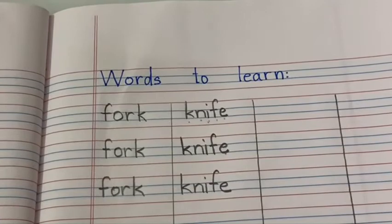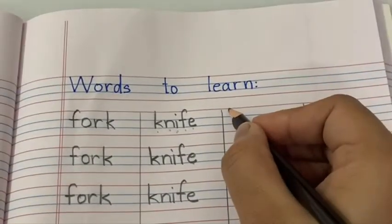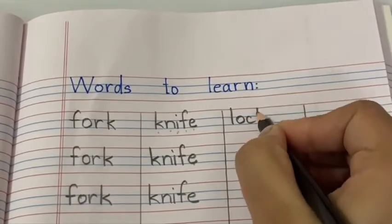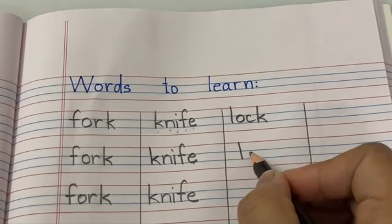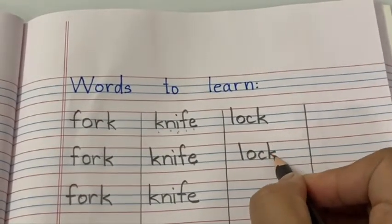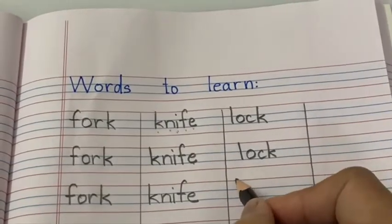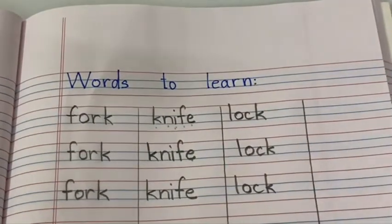Next word is lock. Lock. L-O-C-K. L says L, O says O, C-K together, K. Lock. L-O-C-K. Lock.